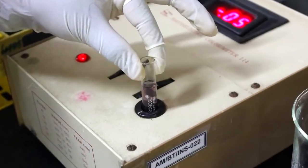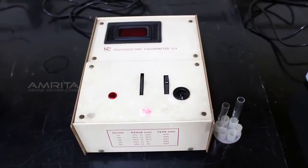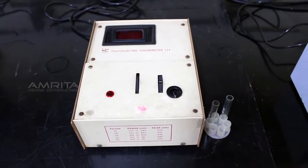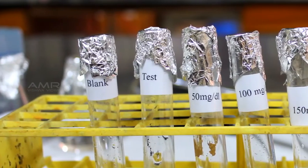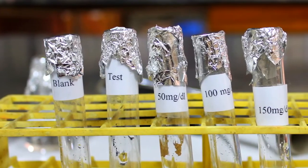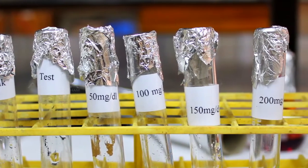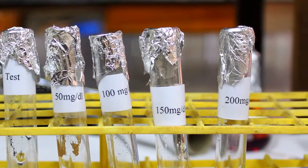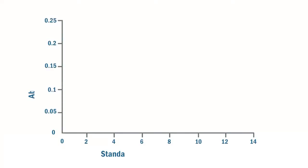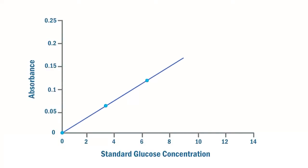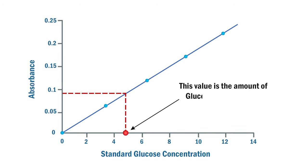After getting the reading, remove the cuvette from the slot. Similarly, note the reading of 100 mg per deciliter, 150 mg per deciliter, 200 mg per deciliter solutions, and the test solution. Plot a graph by taking standard glucose concentration on the x-axis and corresponding absorbance on the y-axis. From this standard graph, the amount of glucose concentration in the test solution can be obtained.